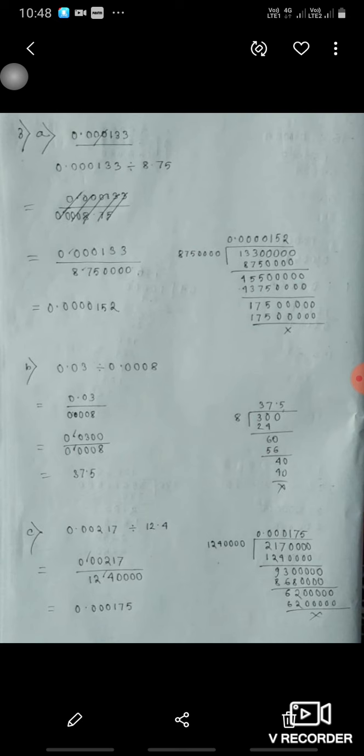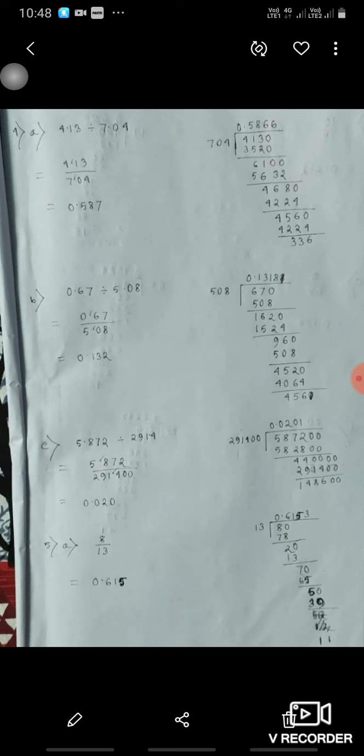Now 4th part, 4.13 divided by 7.05, so 4.13 divided by 7.05, we will get 0.587.